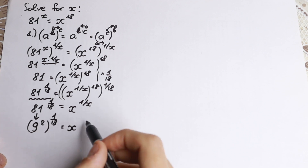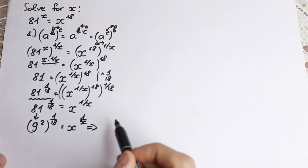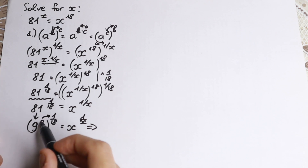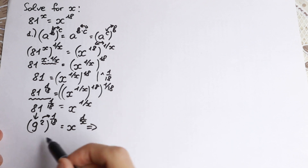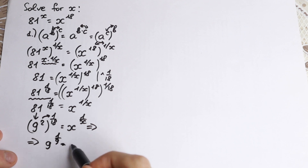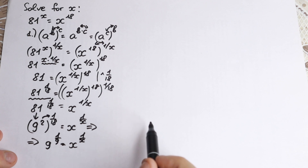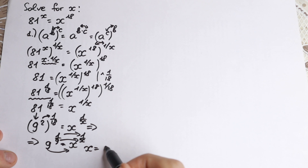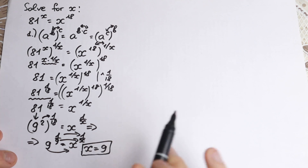So I write 81 as 9 squared. Then 9 squared to the power 1 over 18 equals x to the power 1 over x. 2 times 1 over 18 equals 1 over 9, so we get 9 to the power 1 over 9 equals x to the power 1 over x. We have 9 on the left and x on the right, and it looks like x equals 9. That's our answer — this is the first way, using power rules.